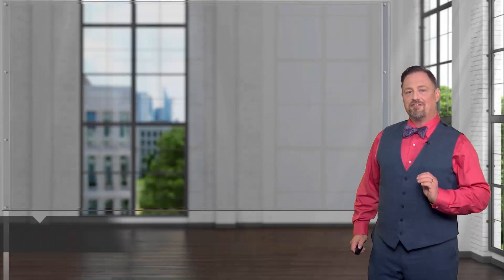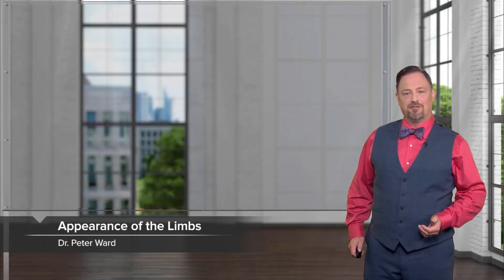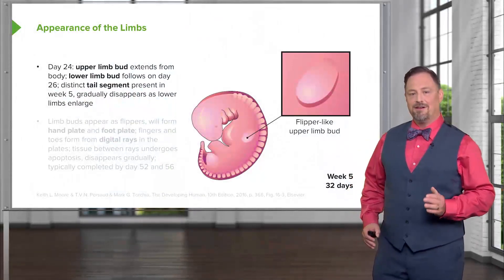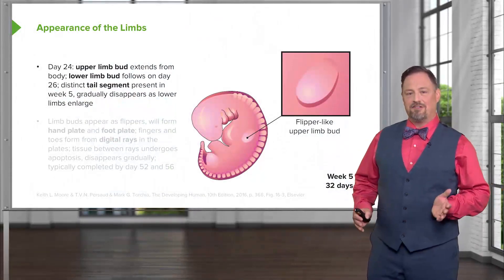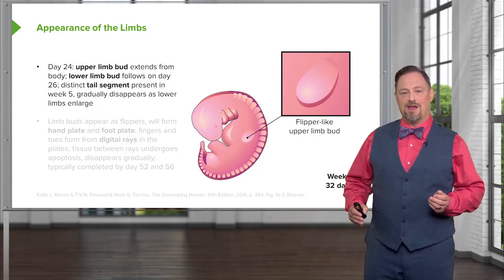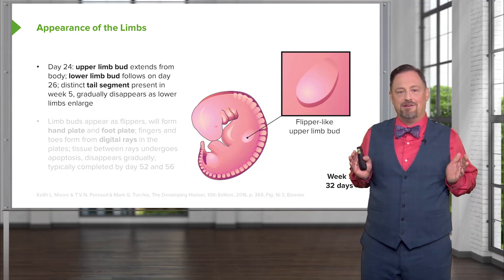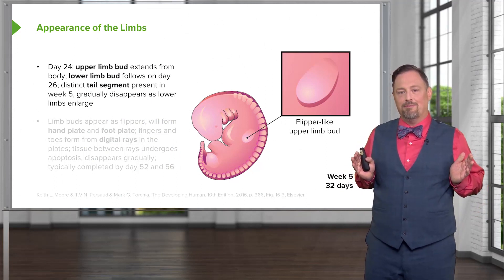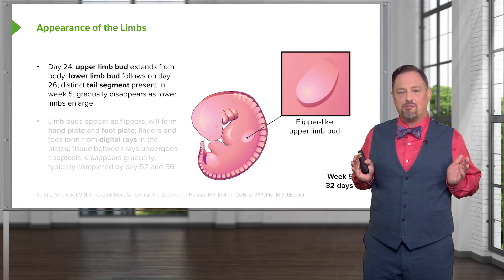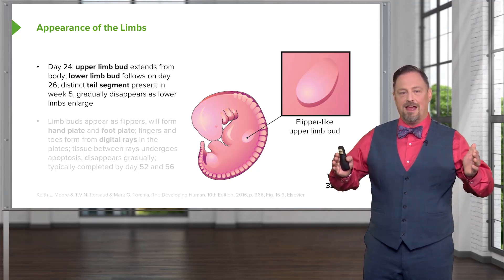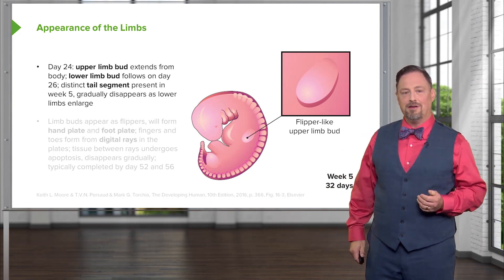We're going to be discussing limb development and migration of the muscles as the limb buds form. Initially the embryo has no limbs, but on day 24 we have a small extension that's going to be the upper limb bud. The lower limb bud follows a couple days later on day 26, and they're gradually going to enlarge as development proceeds and give rise to the upper and lower limb.